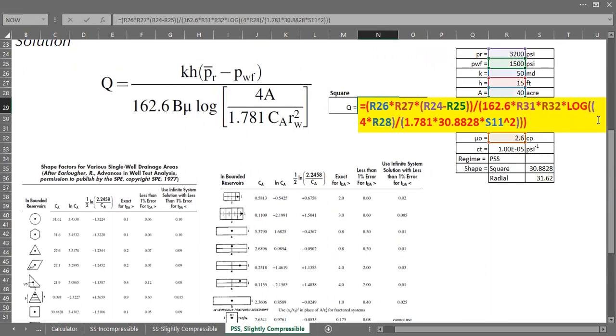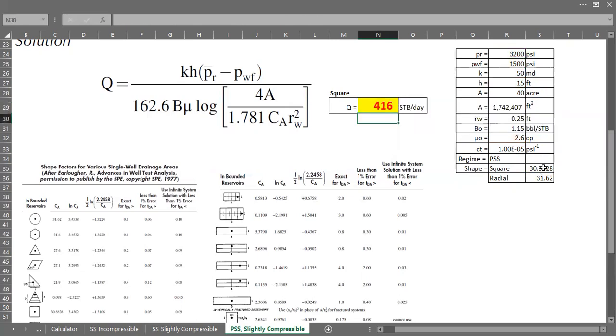Okay, so for square, all right I want to correct this one 4A, so it should be 4 multiplied by the area and the area is this one. And then the shape factor, this one I want to delete it and just take the number from here.